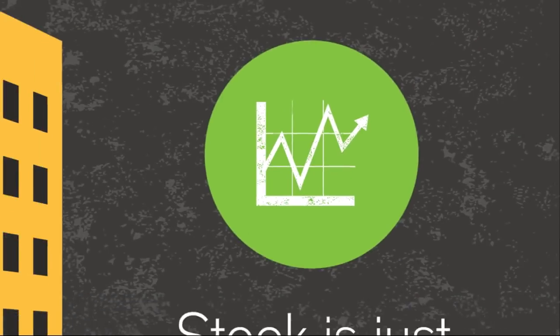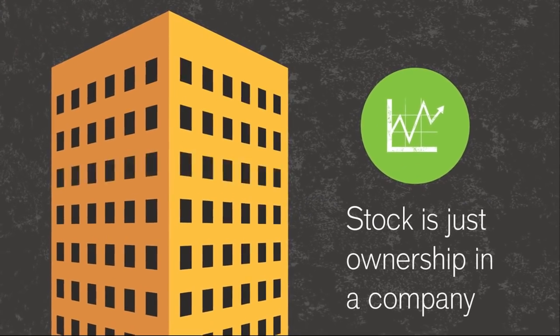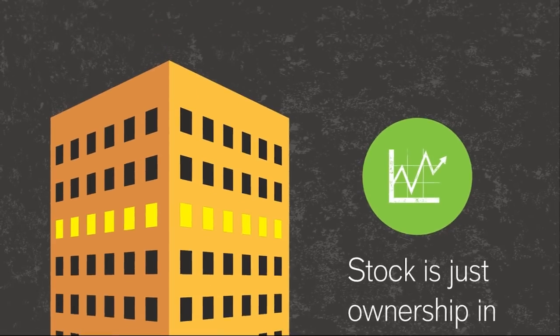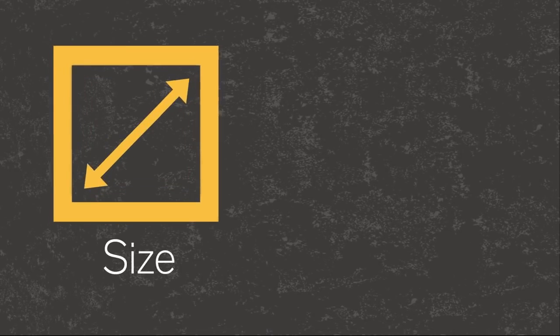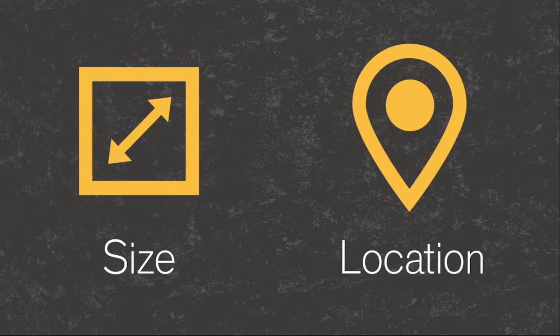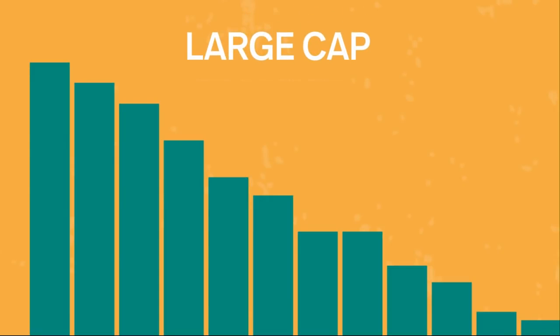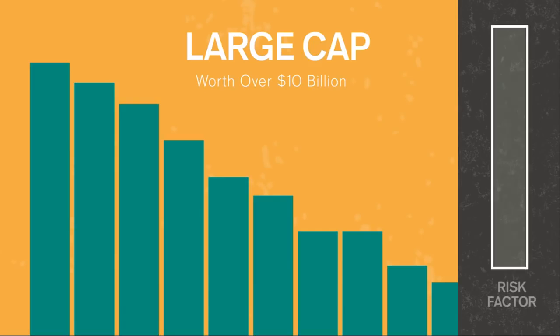Stock is just ownership in a company. There are many ways to classify stock. Two major ones are size, called market capitalization or cap, and company location. Each classification has its own typical level of risk. Large cap stocks include the 500 biggest companies in the US: Apple, Walmart, Disney, Ford, McDonald's. Ever heard of the S&P 500 or blue chips? Same thing.